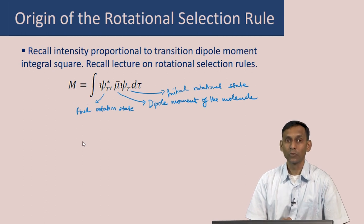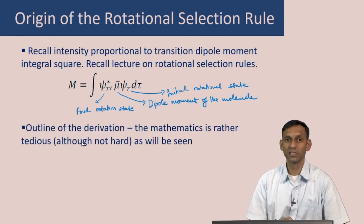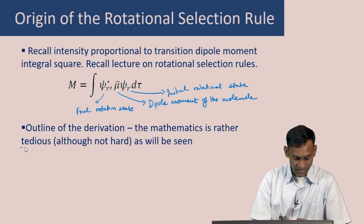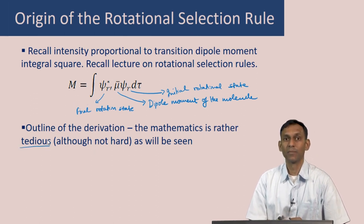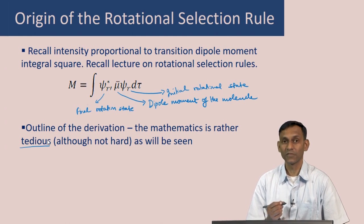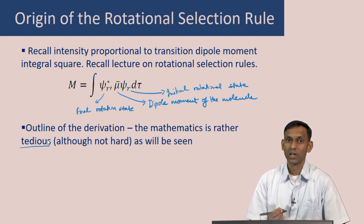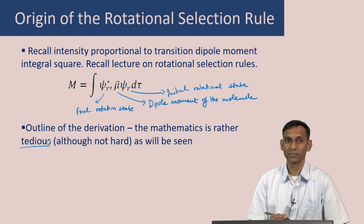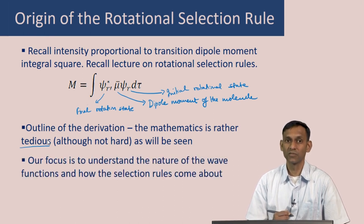We will now outline the derivation of this selection rule. Keep in mind that the mathematics is rather tedious — not really hard, but there are a lot of steps and it will take a long time to go through all of them. So in the interest of time, I will show you how the derivation works without going through every step. Our focus is to understand the nature of the wave function and understand how the rotational selection rule comes about.